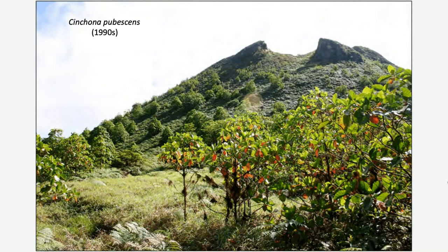One species I want to point out is Cinchona pubescens, or the quinine tree. This species was introduced into the Galapagos decades ago because of the anti-malarial properties of quinine. It was introduced into the agricultural zone of Santa Cruz Island, where more than 30,000 people live primarily on four islands. Cinchona escaped the agricultural zone and invaded a wide range of areas — you see a photo from the 1990s where it had spread around Los Picachos volcano.